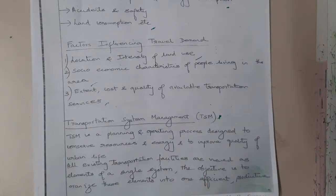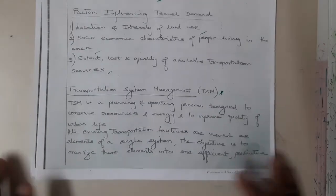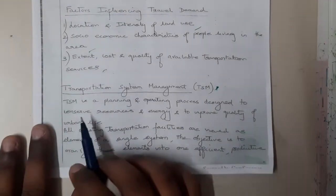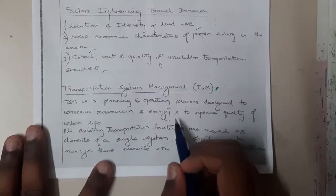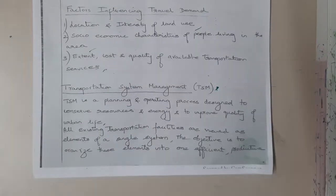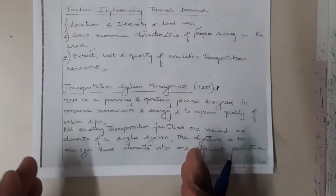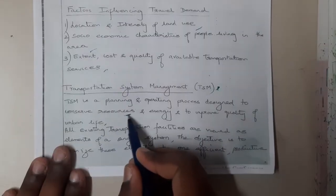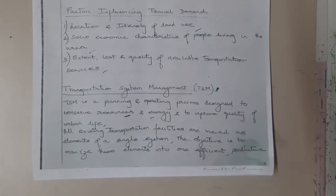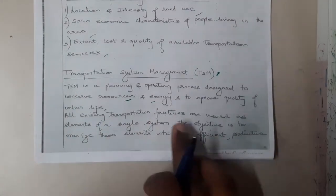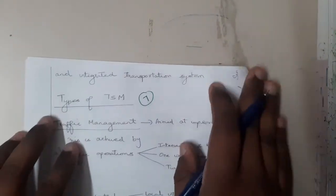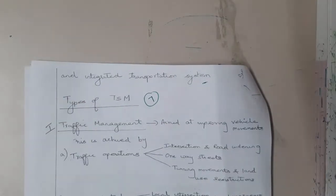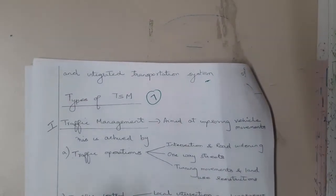Now let us go through the important topic — Transport System Management, or TSM. TSM is a planning and operating process designed to conserve resources and energy and to improve the quality of urban life. All existing transportation facilities are treated as elements of a single system, with the objective of organizing these elements into an efficient and integrated transport system.